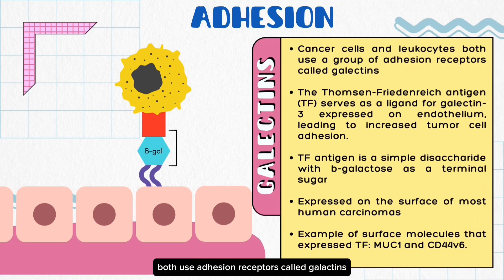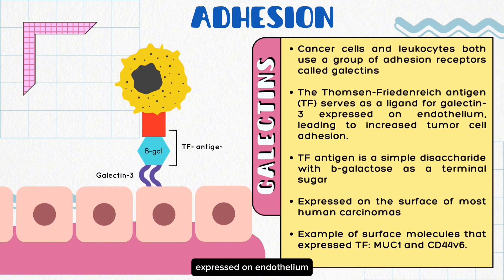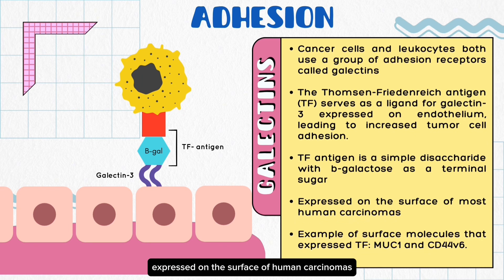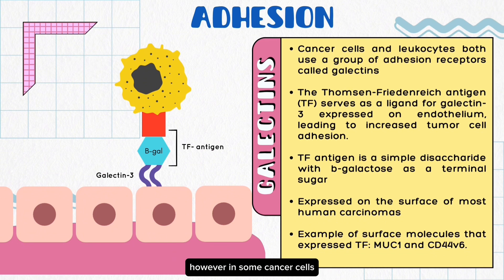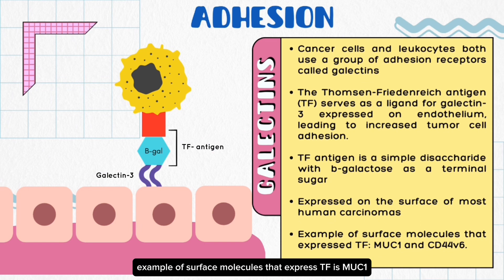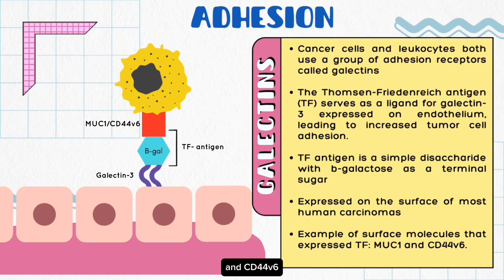Cancer cells and leukocytes both use adhesion receptors called galectins. The TF antigen serves as a ligand for galectin-3, expressed on the endothelium. TF antigen is a simple disaccharide with beta-galactose as a terminal sugar, expressed on the surface of human carcinomas. In normal cells, the TF antigen is usually hidden or masked by other sugar molecules. However, in some cancer cells, the antigen becomes exposed on the cell surface. Examples of surface molecules that express TF include MUC1 and CD44V6.